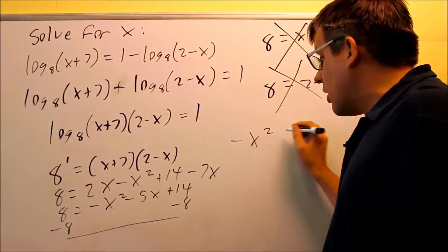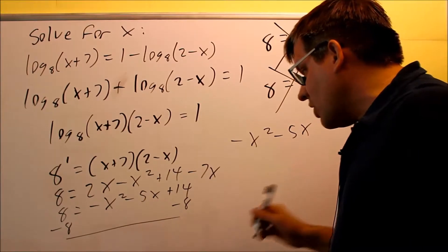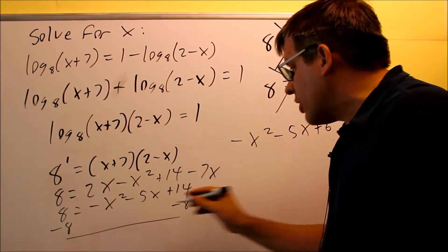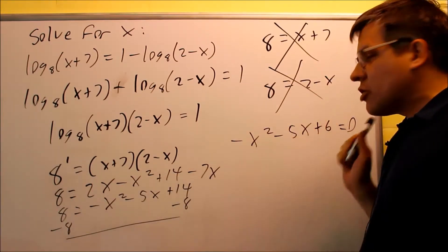And you get negative x squared minus 5x. And that's going to be plus 6. And then we have that basically is going to equal 0, because that's what we're going to get on that side. So we get this as a result.